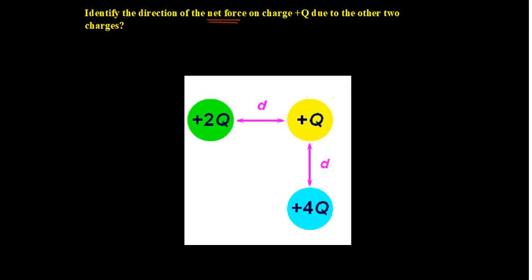The positive 2q and the positive q (yellow) have a repulsive electrostatic force, so it pushes in one direction. Also, the 4q charge is twice the amount of the 2q charge, meaning the force generated by 4q will be double the force generated by 2q. Both interactions are repulsive — the 2q pushes horizontally and the 4q pushes upward.